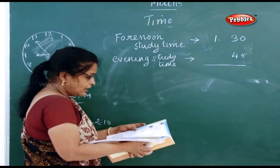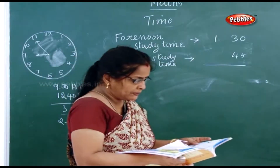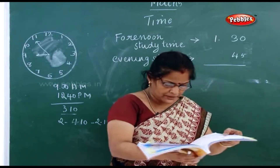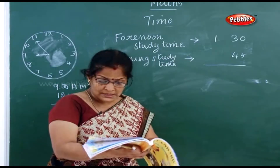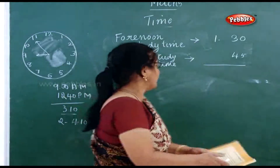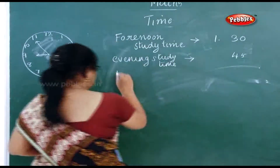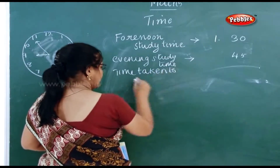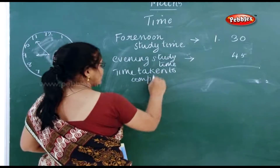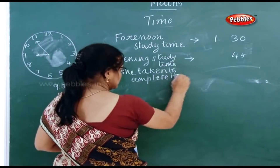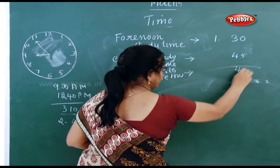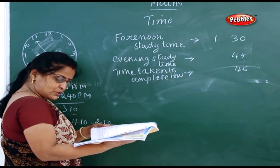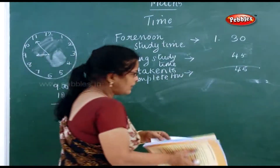Now, what is the time taken to complete his homework? Homework was 6 PM to 6:45 PM. Time taken to complete his homework is again 45 minutes, because the time is from 6 o'clock to 6:45 PM — so 45 minutes.